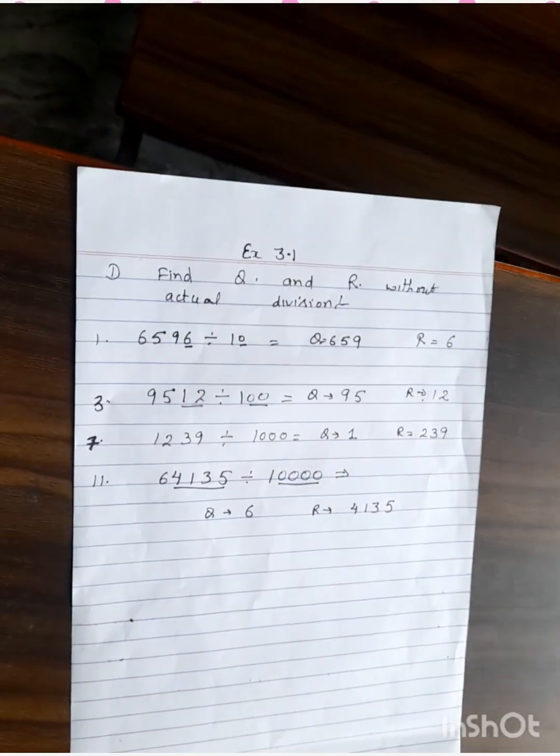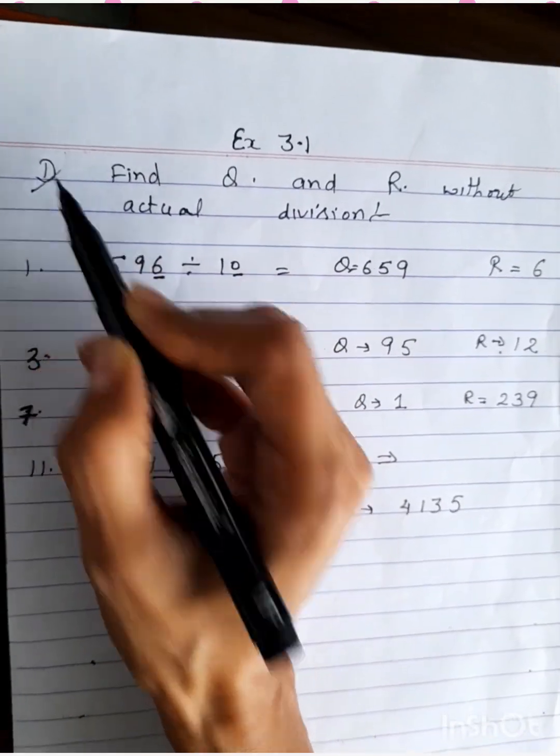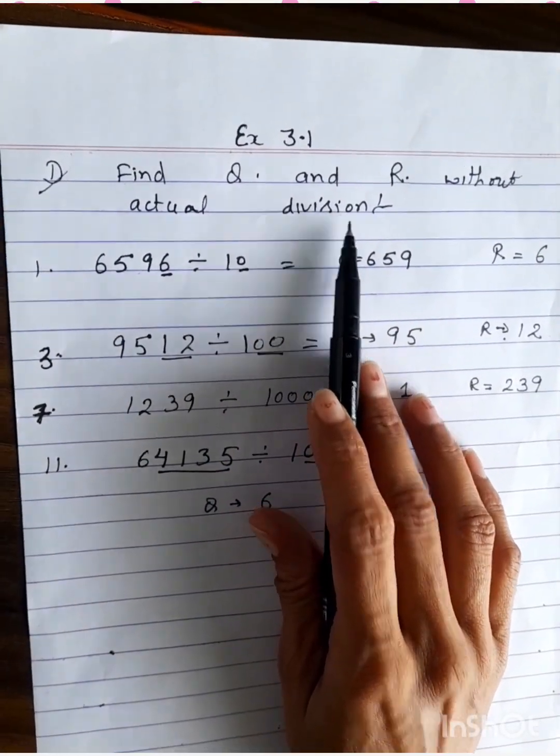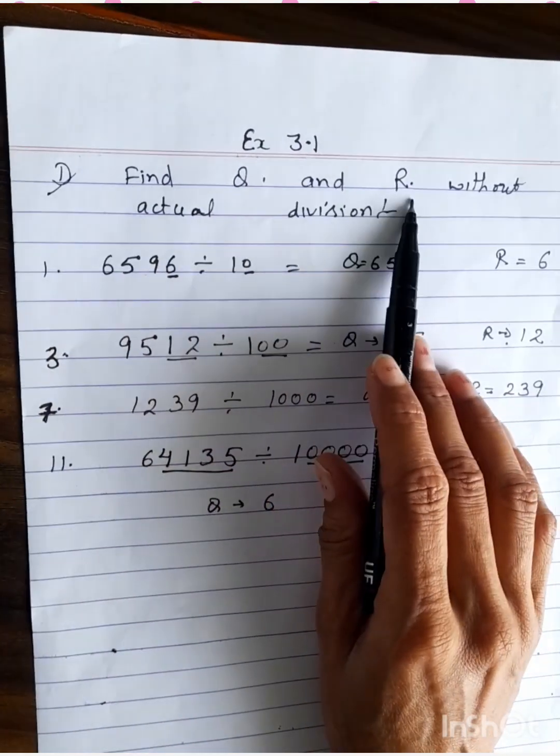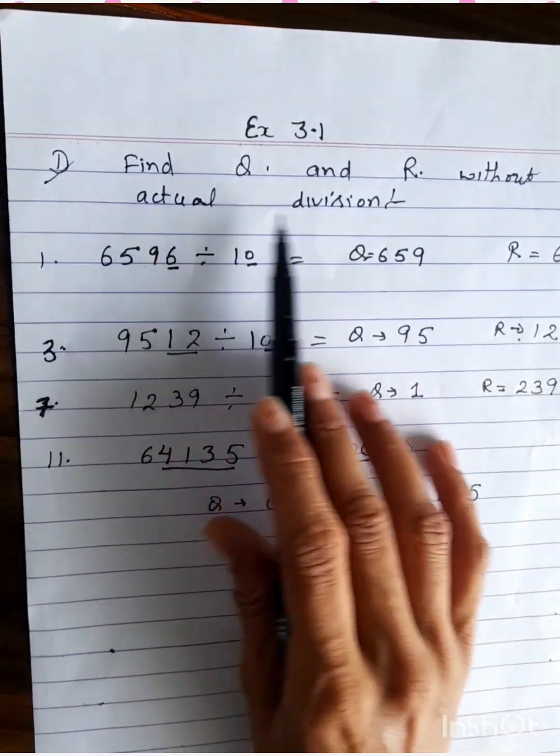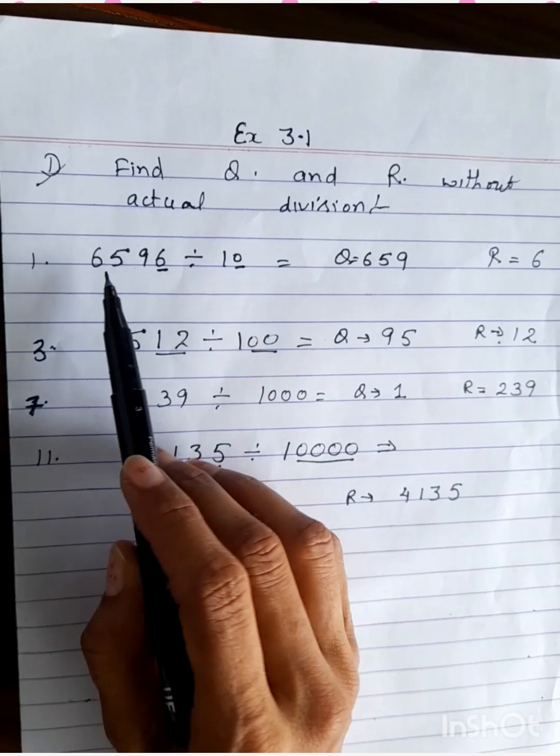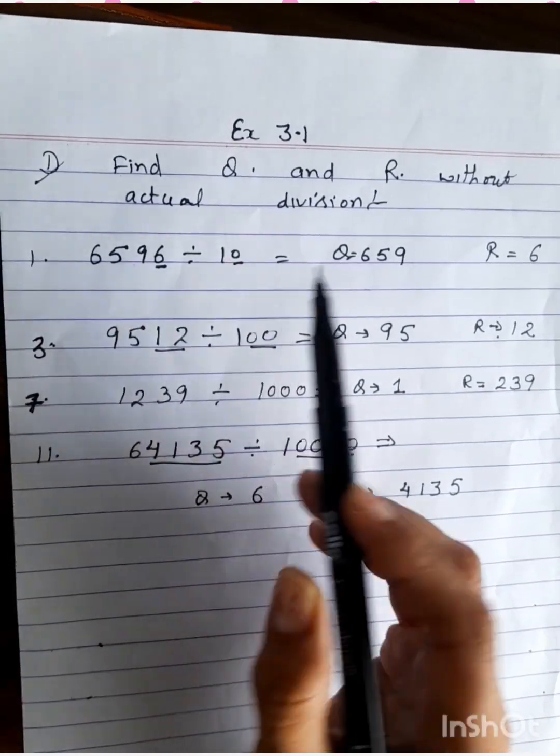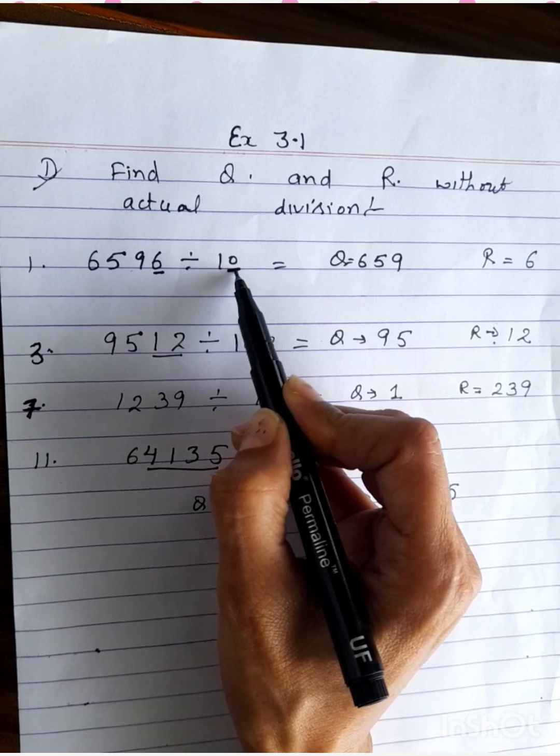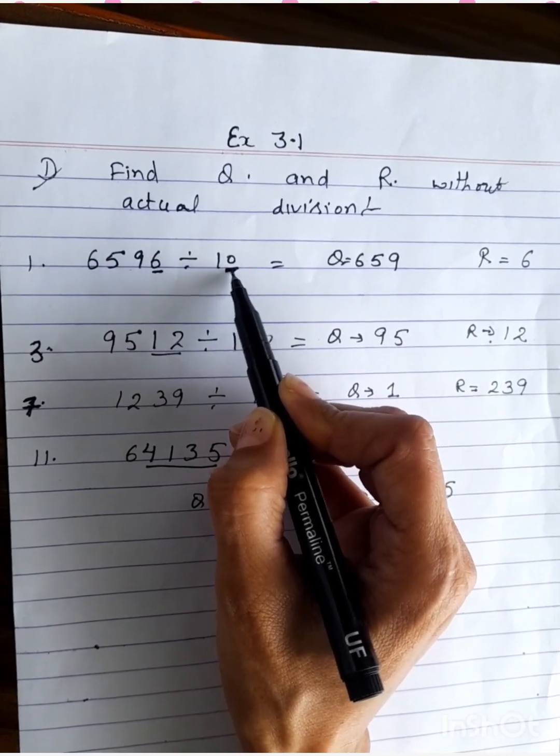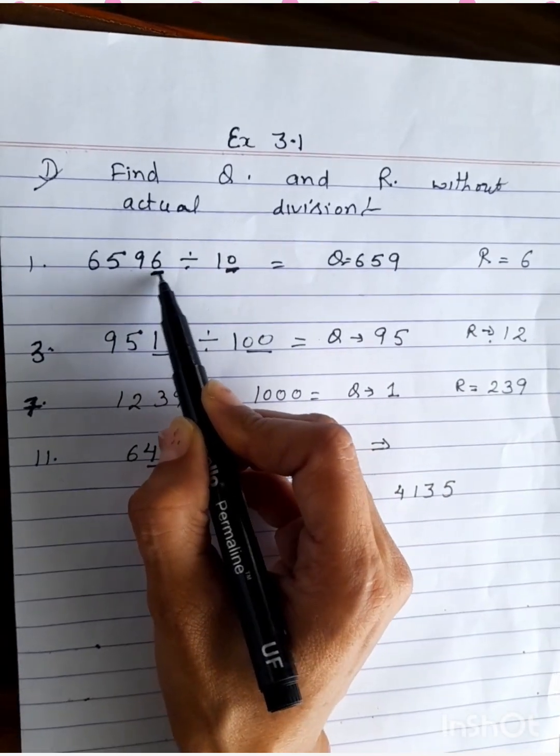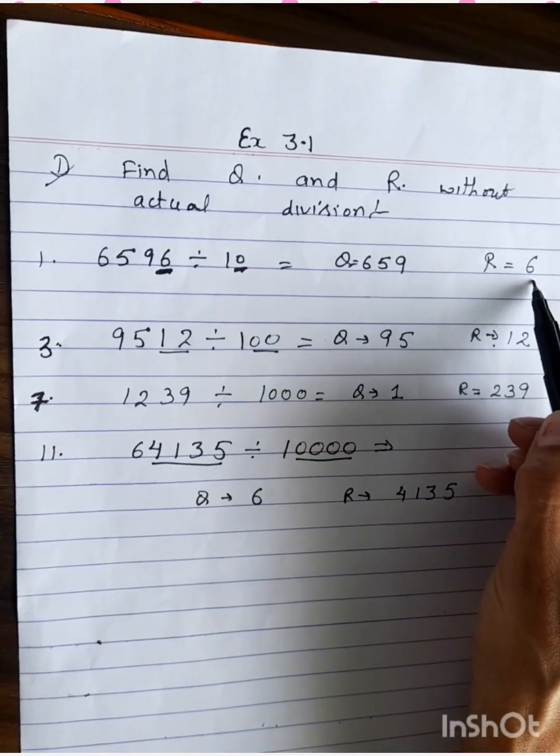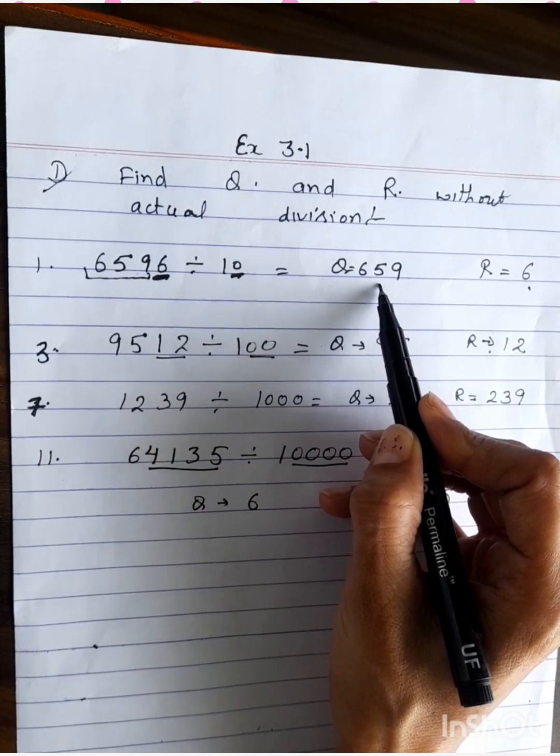Then, again exercise 3.1, part D. That is division. But you will not go for long division. It is find quotient and remainder without actual division. So what is this? 6596 divide by 10. In the divisor, there is a zero. So how many zeros? We will count that. One zero is there. So in the dividend, last digit, we will mark as the remainder. And rest all digits are our quotient.